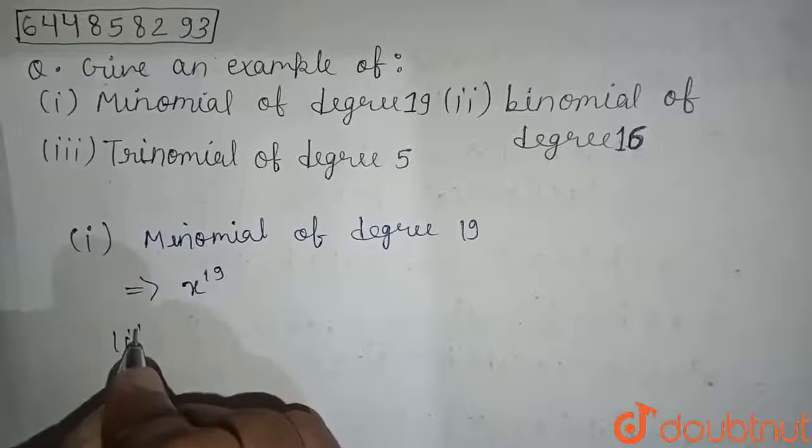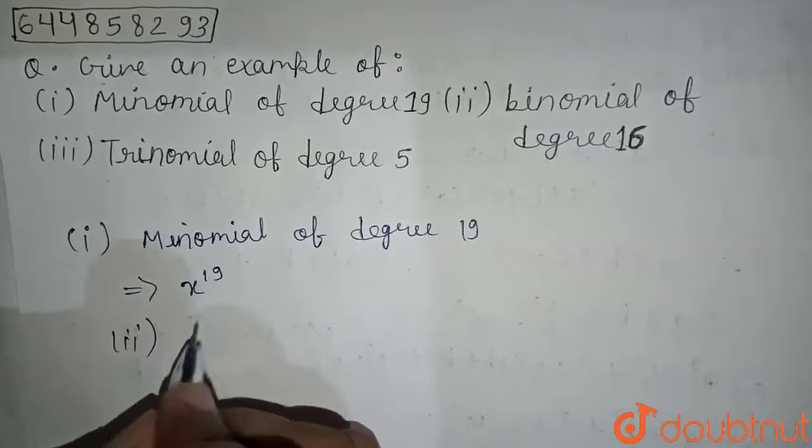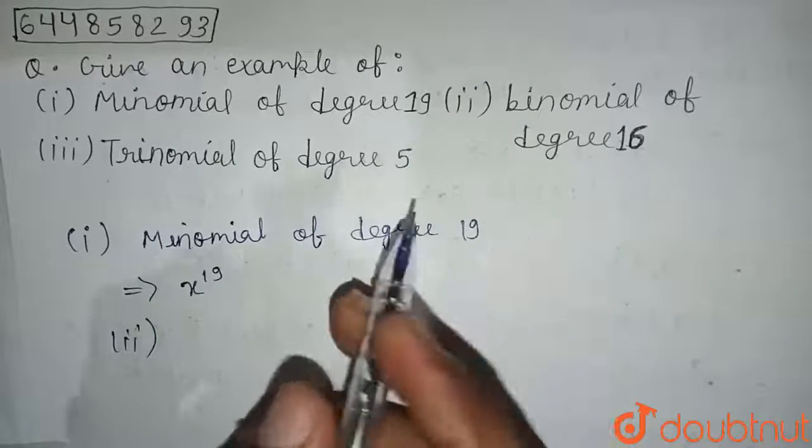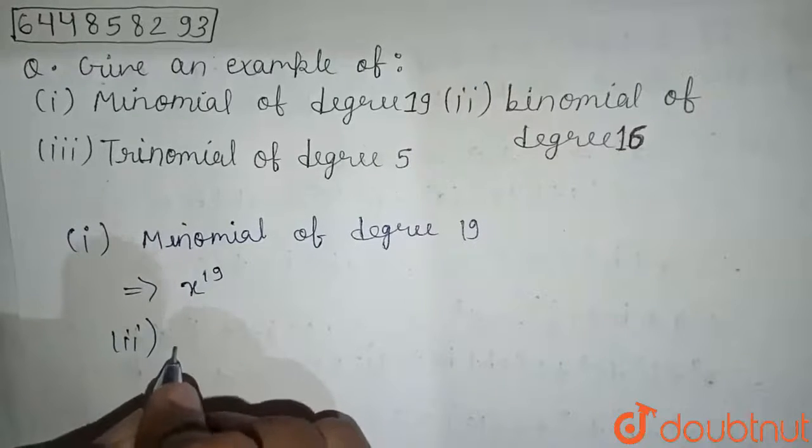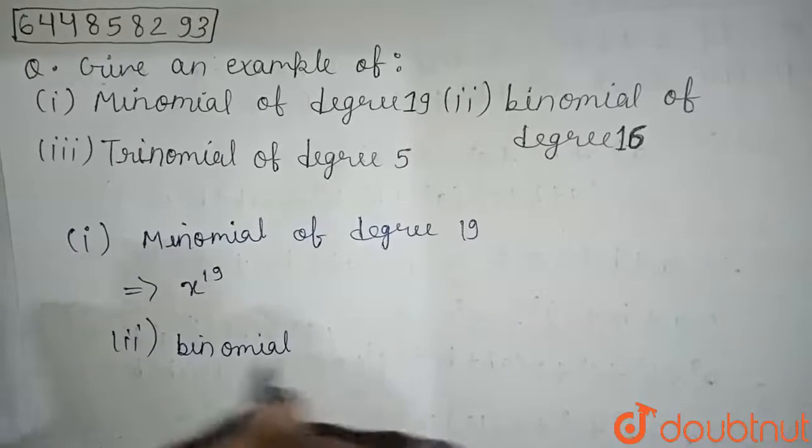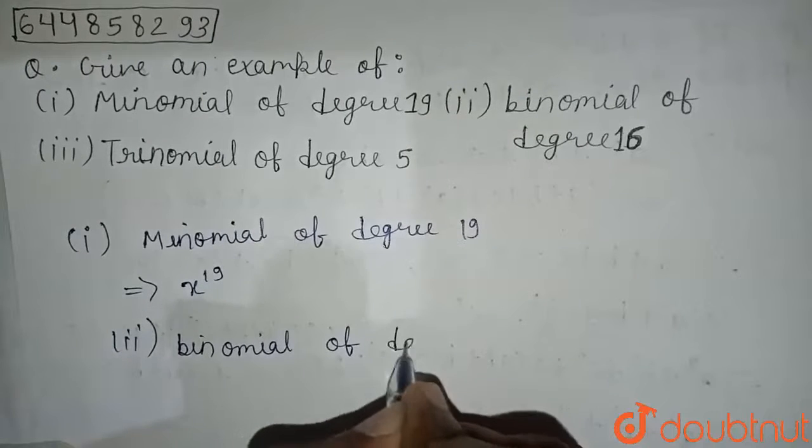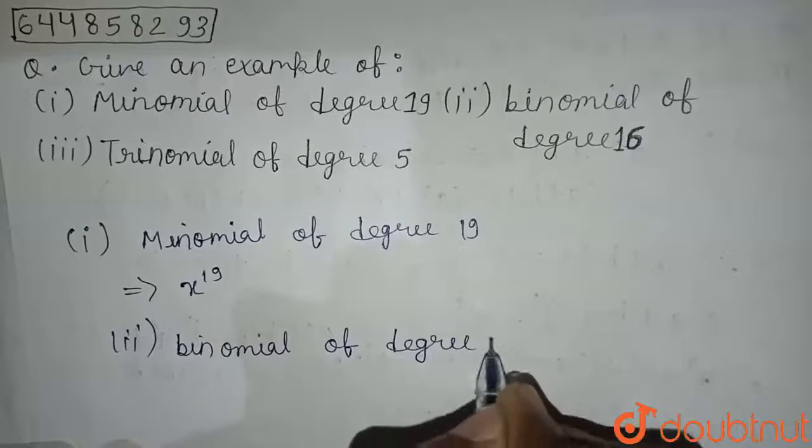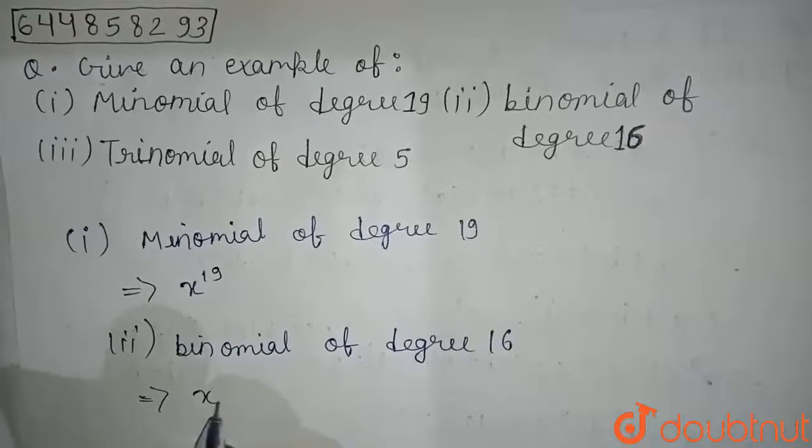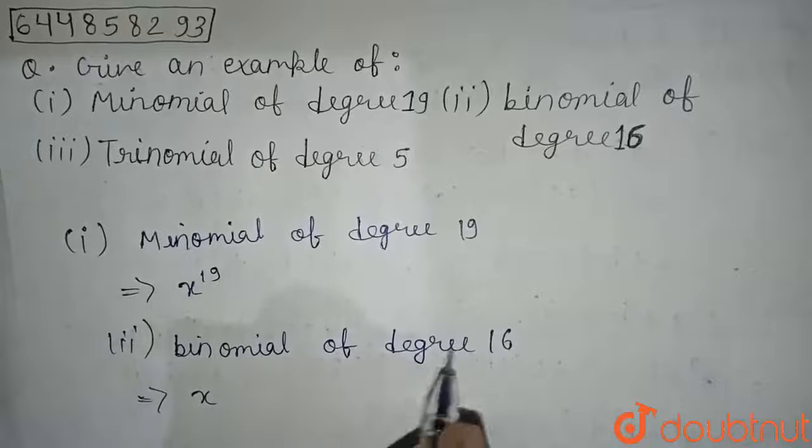Second is binomial, which means two variables, and the maximum power of the variable is 16, that's degree 16. So binomial of degree 16 will be: first variable, let's take x to the degree 16.